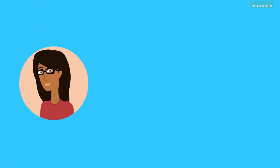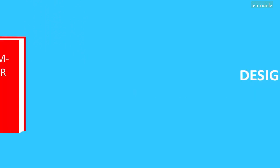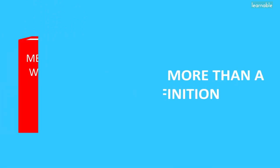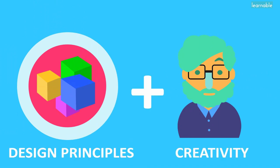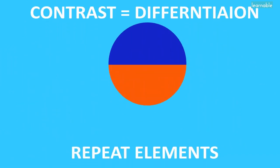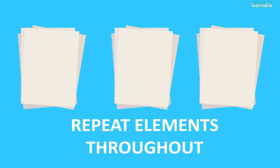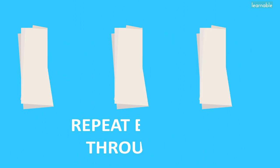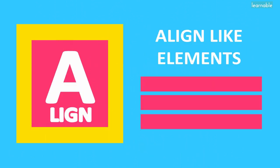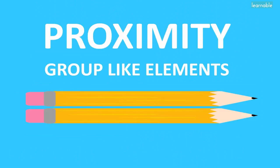Now that we have covered the basics, it's time to recap on today's lesson. We know that design transcends a simple definition and is a combination of good design practices and your own creativity. Adding contrast means to create visual differences. Good repetition means to add repeated elements throughout your design. Aligning elements establishes hierarchy and balance, while proximity is all about grouping like elements together.